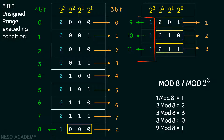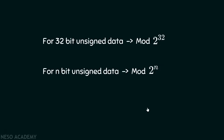Similarly, for a 32-bit representation, if we try to exceed the range, then we have to consider one extra bit, that is 33 bits. But as we are available with only 32 bits, therefore there is no way we would be able to represent a value higher than the maximum value, and we come back again to 0. We can say that for 32-bit unsigned data, our mod function would be mod 2 raised to the power 32. For n-bit unsigned data, this would be mod 2 raised to the power n in general.